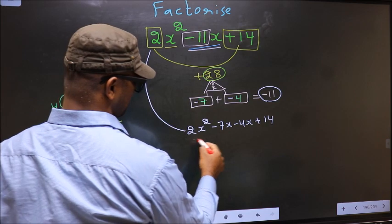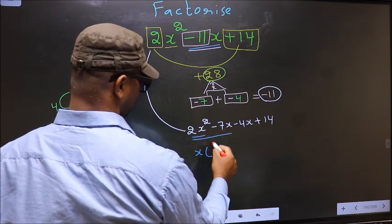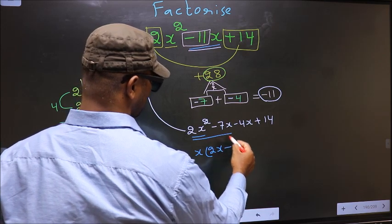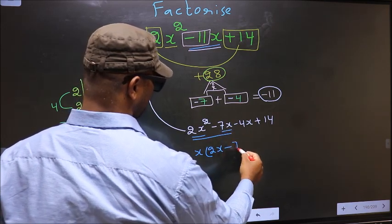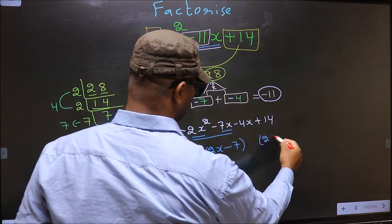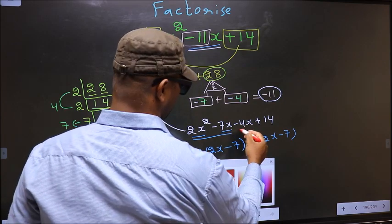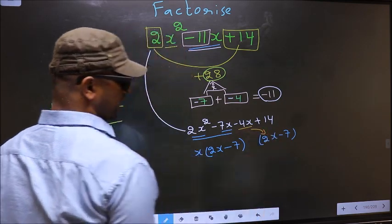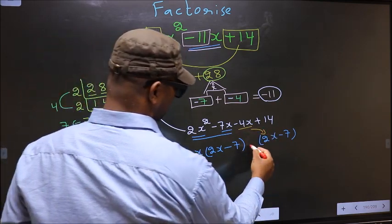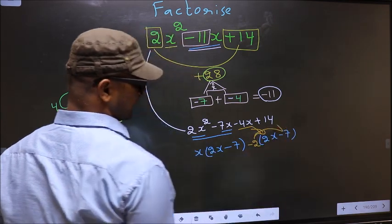Now from these two terms, what can be taken out common is x. So here you get x(2x - 7). Whatever you got here, here also you should get the same thing. Now from this, 2x has gone inside, so outside you get -2. Even if you multiply and check, you still get the same thing.